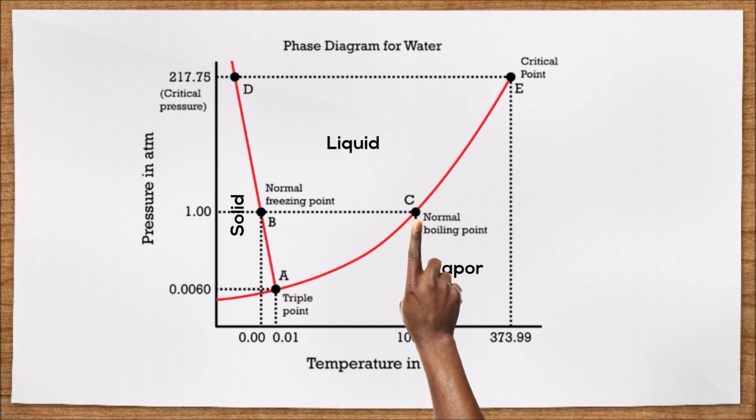As we can see, the water evaporates at 100 degrees Celsius when the pressure is equal to 1 atmosphere. But water can pass from liquid to gas at much lower temperatures.